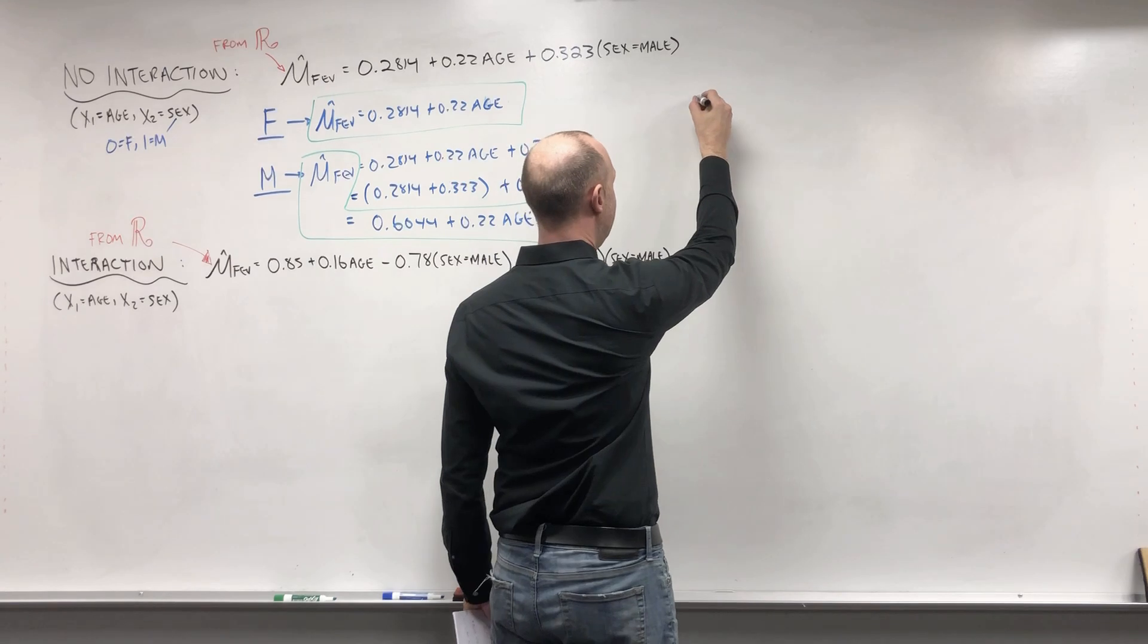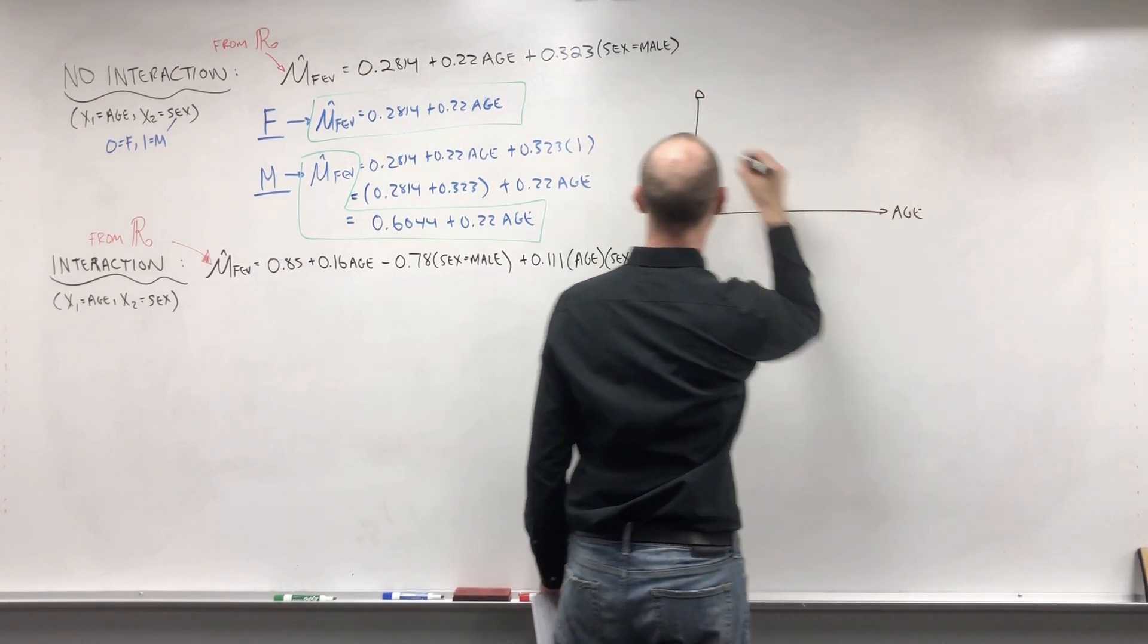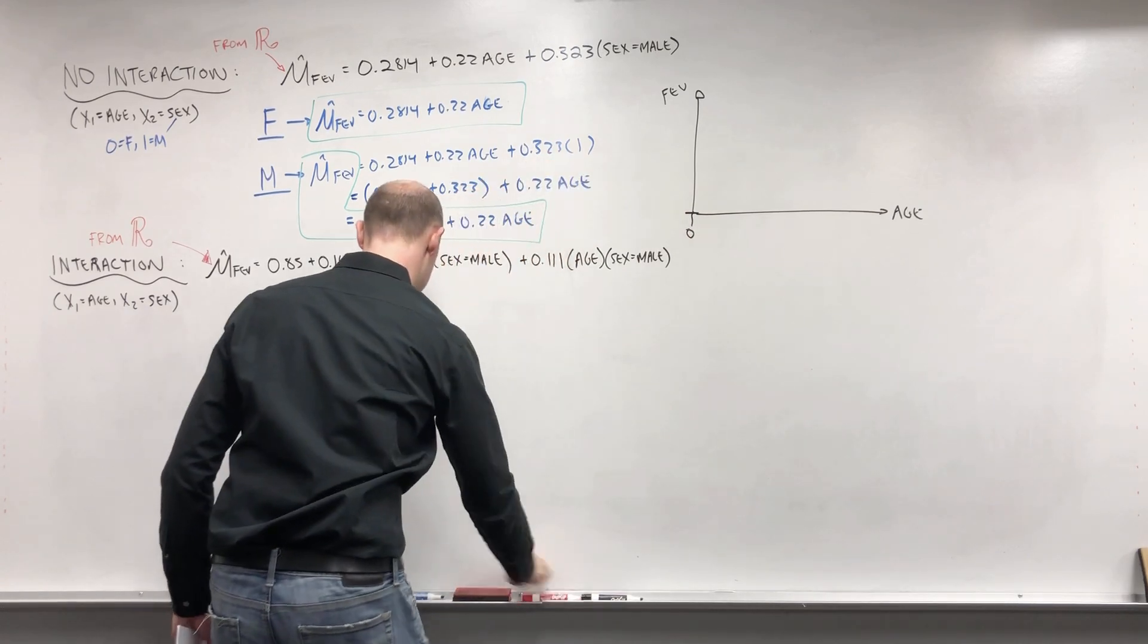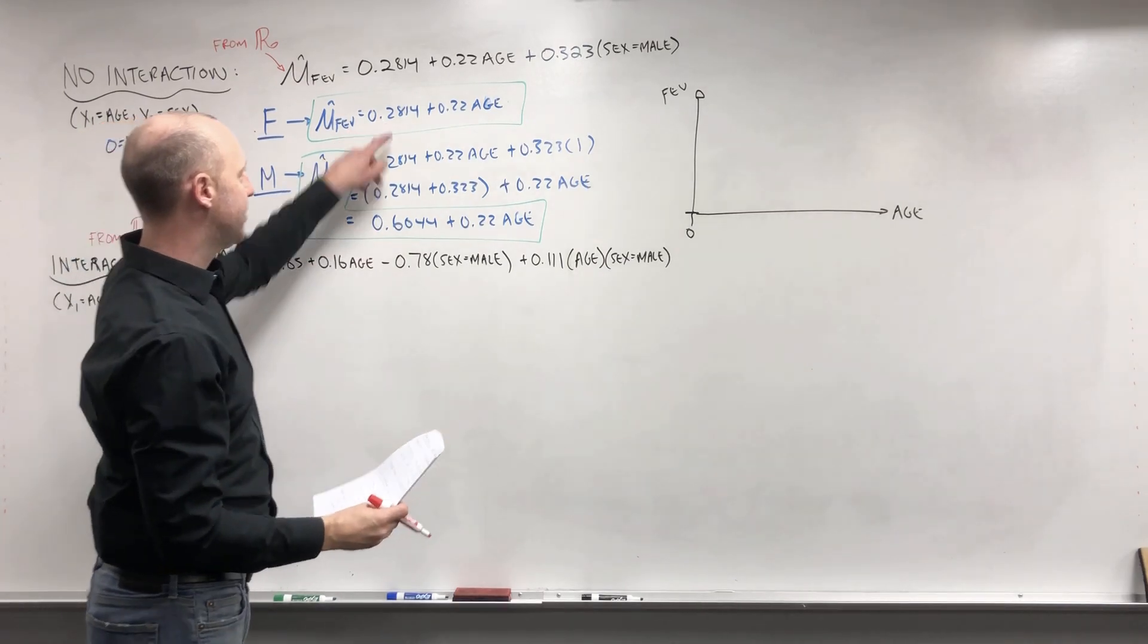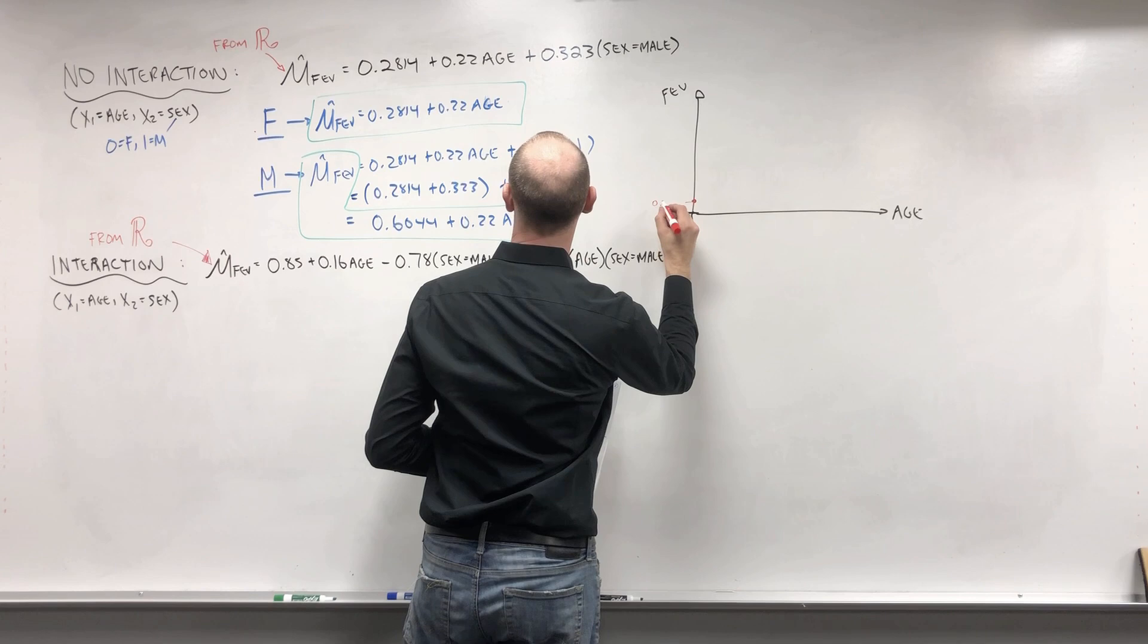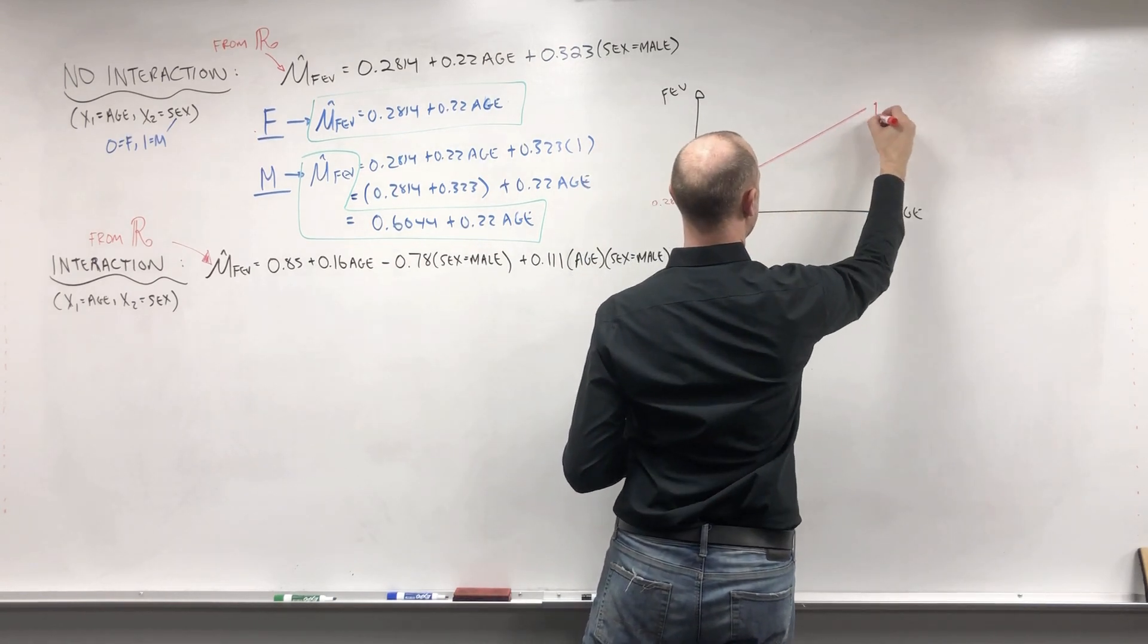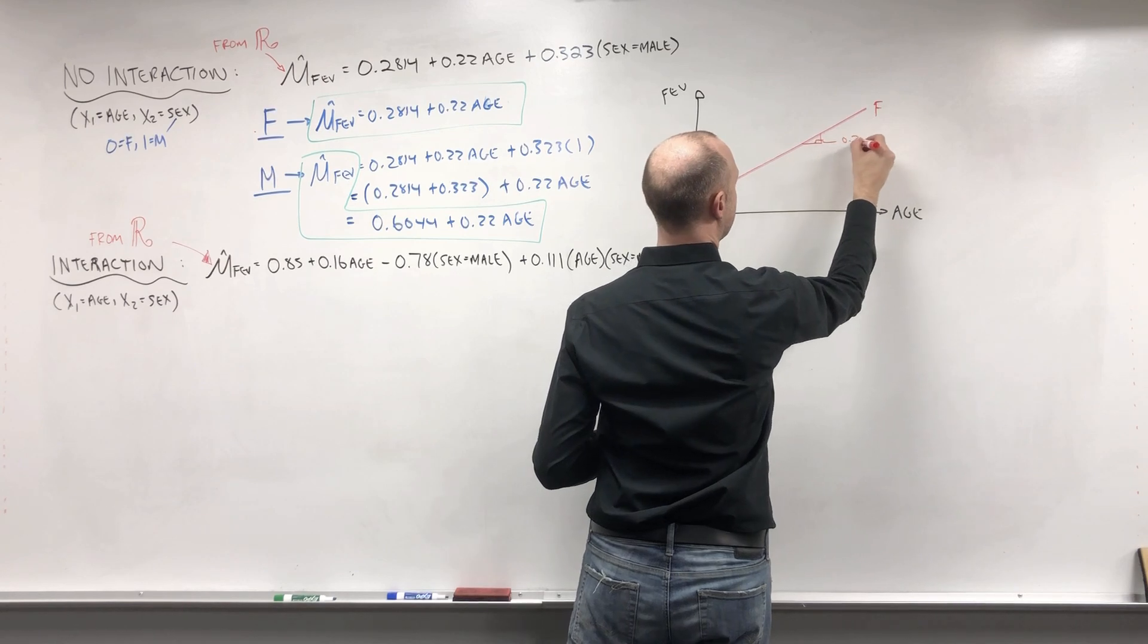Now if we took a look at the two of those, here's age, here's the FEV. If we go down to an age of 0, first let's add the line for females. Their intercept is 0.2814 and the slope of that line is 0.22. So this is for females and the slope of that line 0.22.